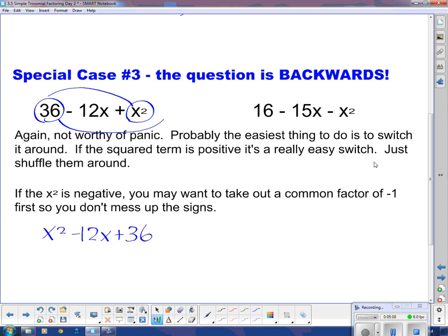When I factor it, I've got to have x's at the beginning. I know that the signs are the same and I know they are both negative. So we put them in. And now they have to multiply to 36 and add to 12. There's our 6 and our 6 again.